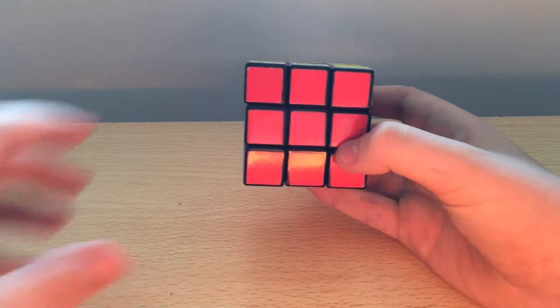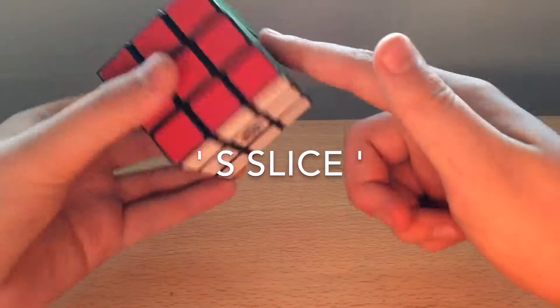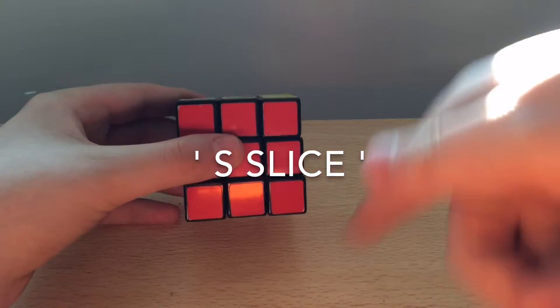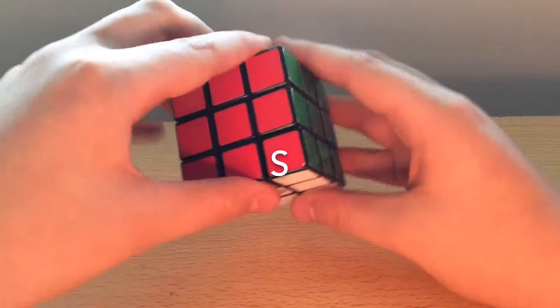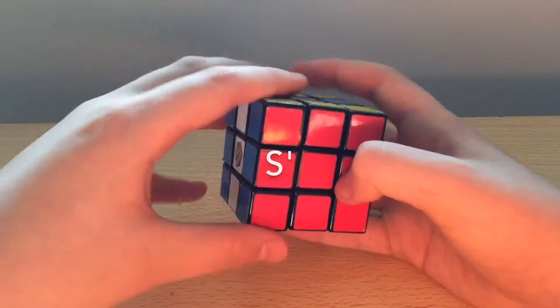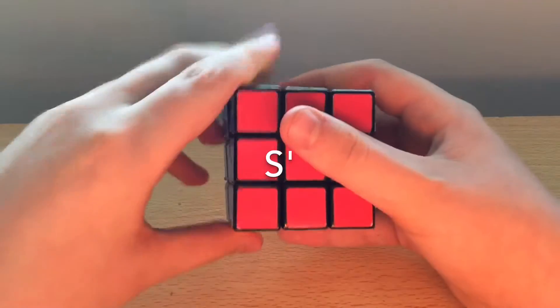And then if we're going to do S slices, the S slice is the last sort of thing that looks like it's between the front and the back face. And an S move is going to be this, and an S dash move is going to be like this.